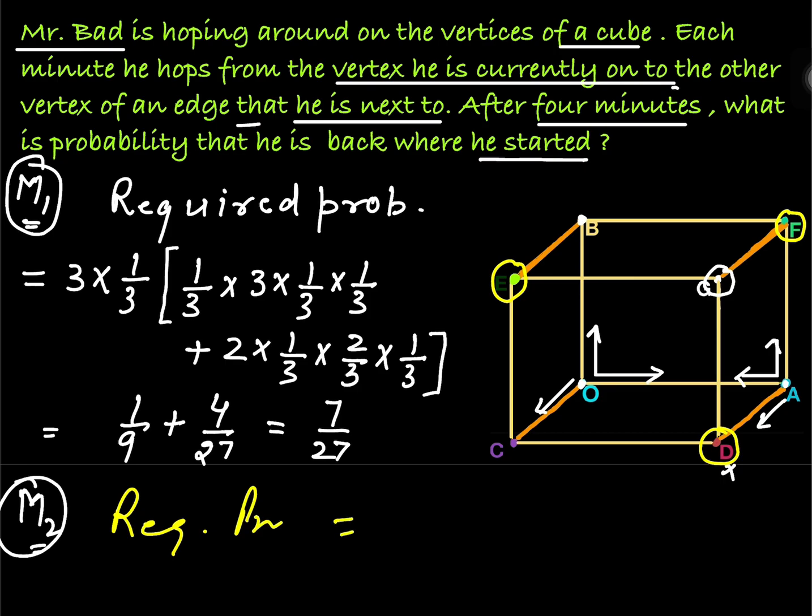But is it possible to reach at D after three steps? Let's check. First step, suppose he is going towards A. After first step, he is at A. In second step, in two steps he can reach at D. But in three steps, is it possible that he will reach D? O to A, A to F, D? No, it is not possible. So D, E and F are having similar positions. So after three steps, it is not possible that he will reach either D or F or E.